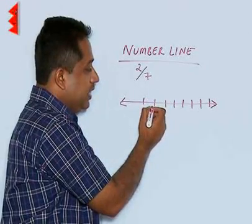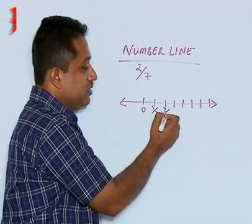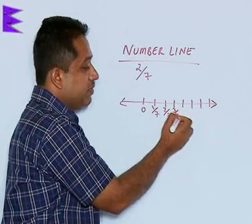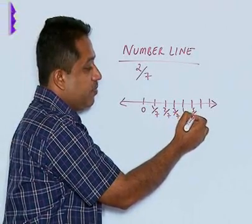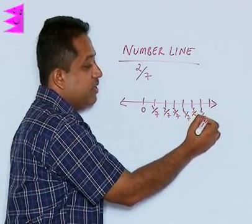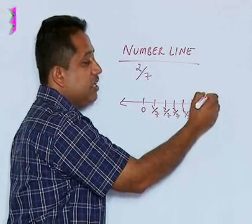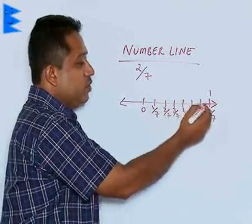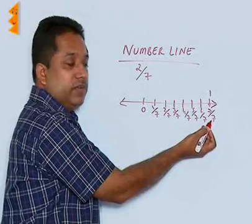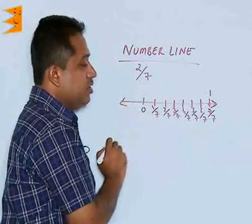The first part here we are going to write as 1 by 7. This is 2 by 7, 3 by 7, 4 by 7, 5 by 7, this is 6 by 7 and this is 7 by 7 which is equivalent to actually 1. Between 0 and 1 we are making 7 equal divisions and we have to represent 2 by 7.